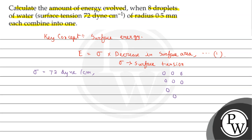These 8 droplets form a bigger droplet. The bigger droplet has radius capital R and the smaller droplet radius is small r. The radius r given in the question equals 0.5 mm.